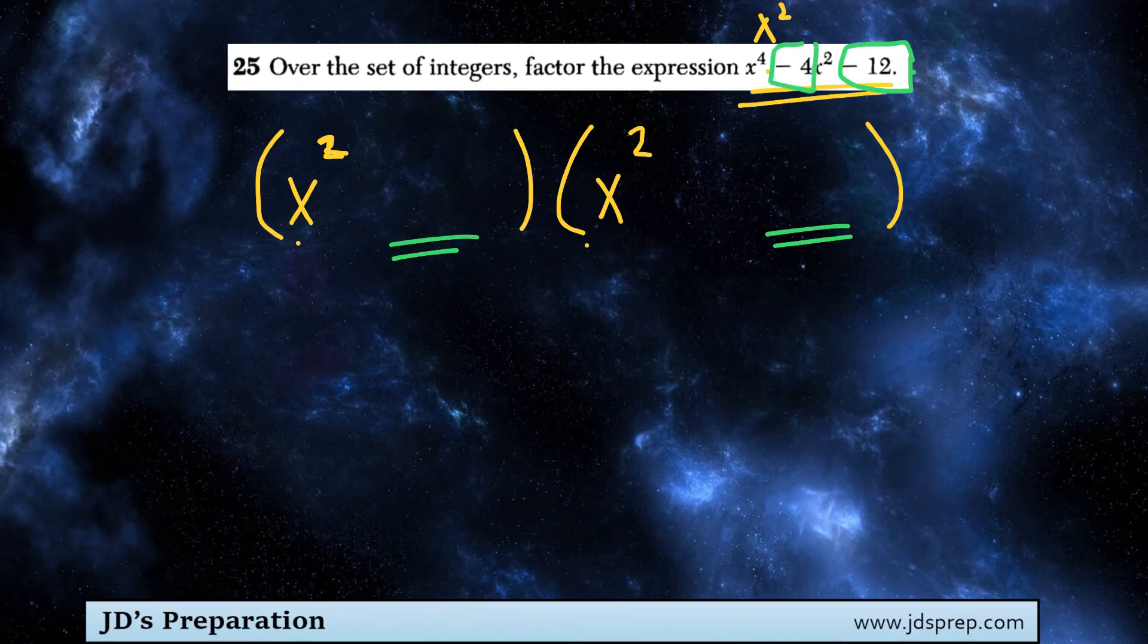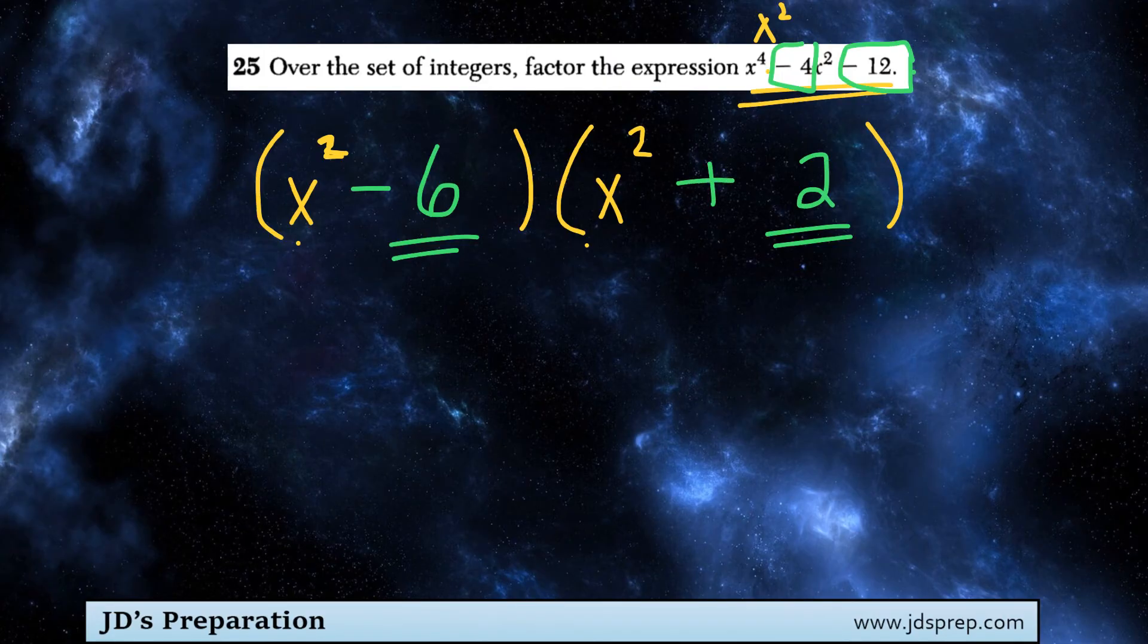So, I'm thinking 3 and 4. 3 and 4 wouldn't work. 6 and 2 would work, as long as the 6 was negative and the 2 is positive.